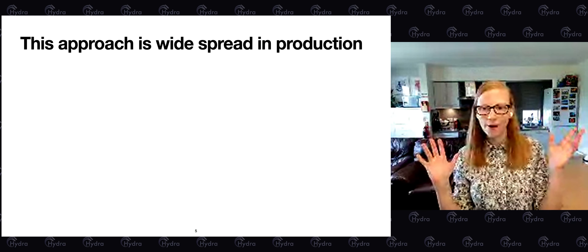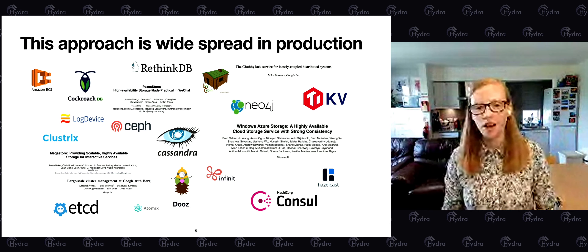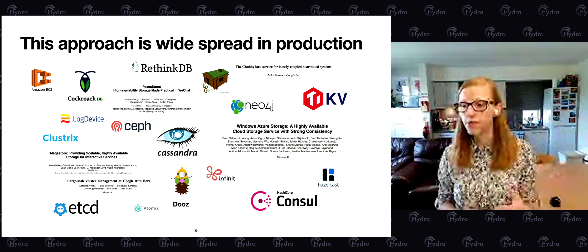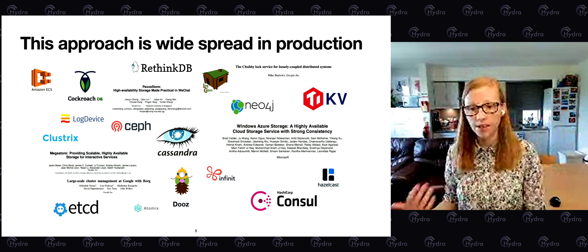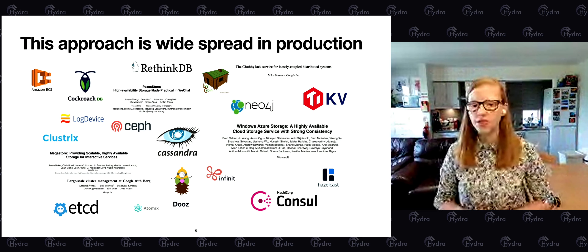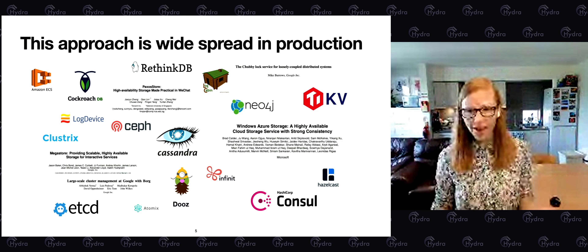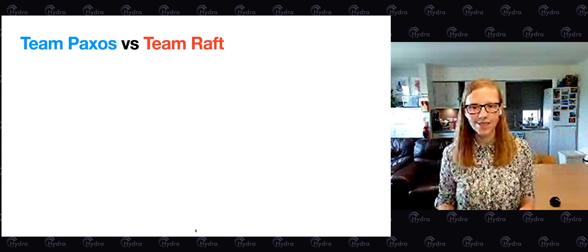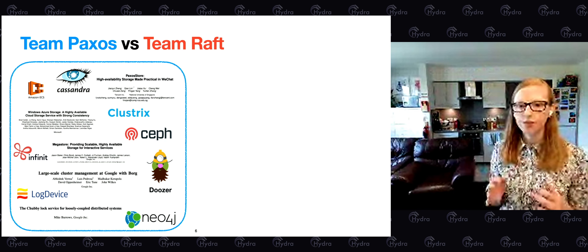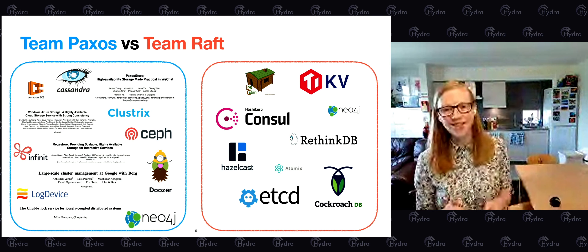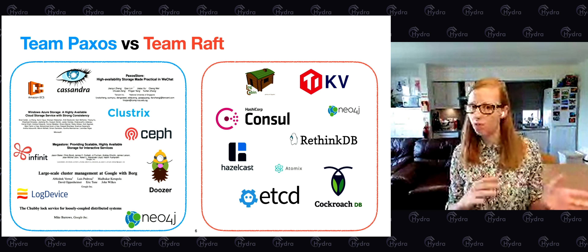This is absolutely pervasive in production. A couple of big examples: the Chubby system at Google — the lock server Google uses widely in production — which implements an algorithm called Paxos. Also, etcd, a strongly consistent key-value store used by Kubernetes, implements an algorithm called Raft. When we look at what's going on in production, we can divide systems into two teams: Team Paxos and Team Raft. Almost all systems fit into one of these two camps.